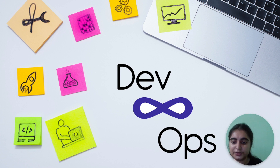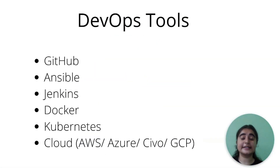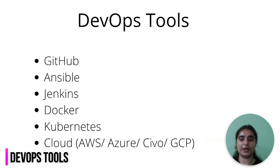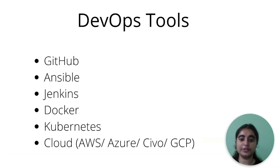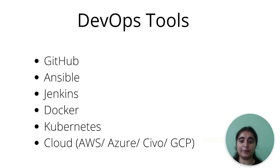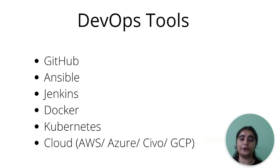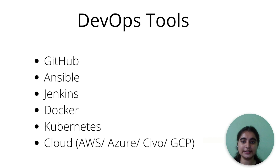Now let's discuss some of the various DevOps tools: GitHub, Docker, Kubernetes. You can also learn about cloud platforms — there are different clouds like AWS, Azure, GCP, and many others. You can learn about Jenkins. These are various DevOps tools you can use. I will share a roadmap where you will find many resources for learning about different DevOps tools — it will be a perfect roadmap for learning DevOps.